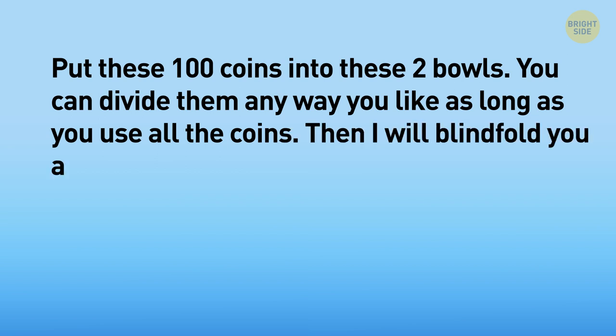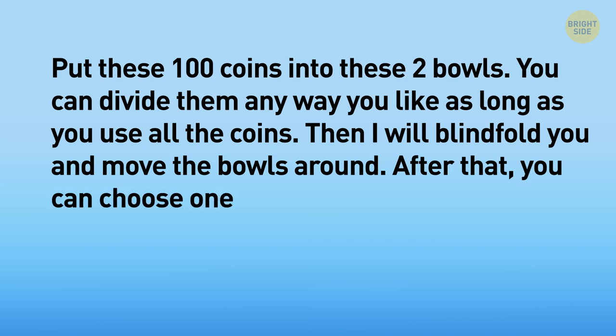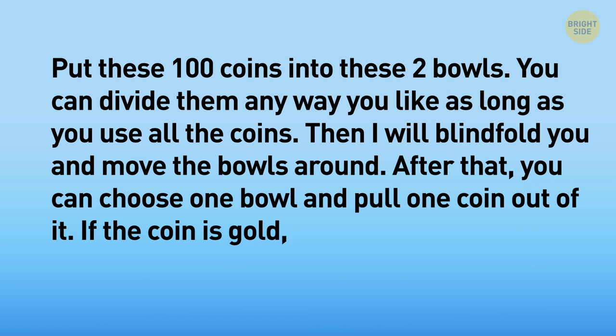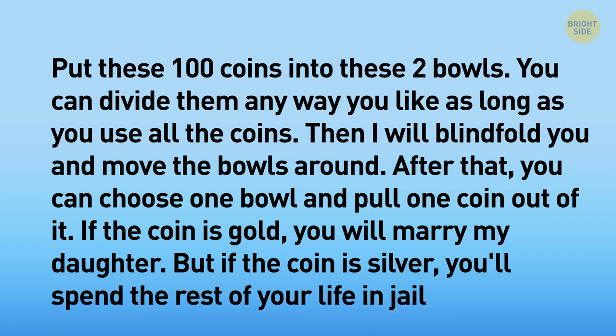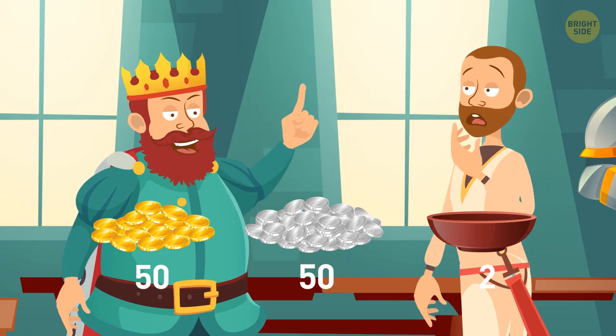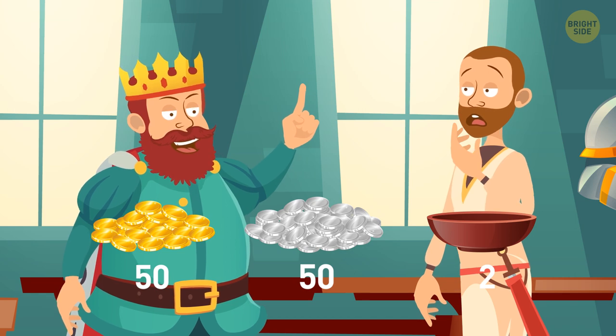Then I will blindfold you and move the bowls around. After that, you can choose one bowl and pull one coin out of it. If the coin is gold, you will marry my daughter. But if the coin is silver, you'll spend the rest of your life in jail. Can you help Arthur raise his chances to marry Jessica?